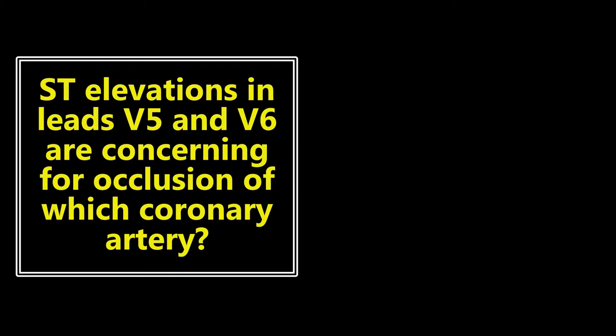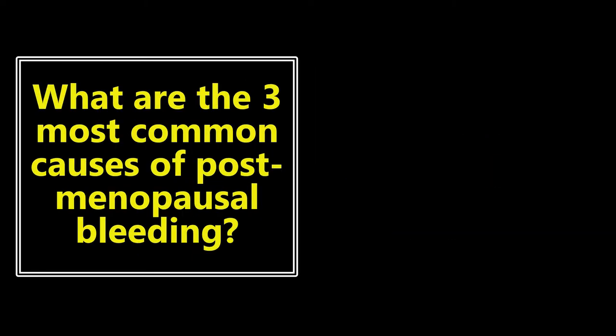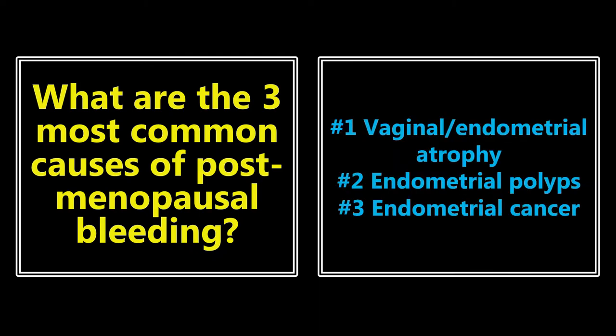ST elevations in leads V5 and V6 are concerning for occlusion of which coronary artery? We need to know how different EKG changes in different leads correspond to coronary arteries. ST elevations in leads V5 and V6 are concerning for occlusion of the left circumflex artery. What are the three most common causes of postmenopausal bleeding? Number one is vaginal or endometrial atrophy, about 60% of patients. Number two is endometrial polyps, about 12%. Number three is endometrial cancer, about 10%. If you see postmenopausal bleeding, you absolutely want to be concerned about cancer, but the most common cause is technically atrophy.